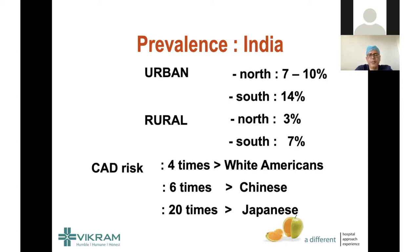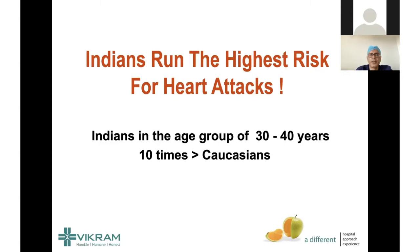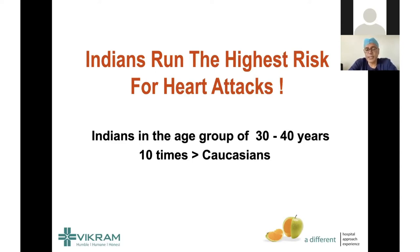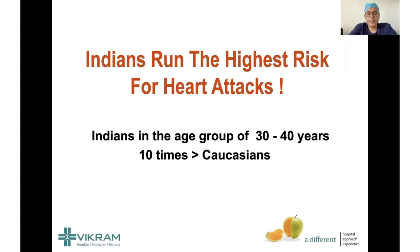During times of famine, those stored calories would be utilized. But when we have round-the-clock availability of high-calorie food in modern times, the same genetic mechanism becomes deadly for us. So Indians run the highest risk for heart attacks, and especially the problem is we have more risk of heart disease in younger age groups — in the 30s and 40s.